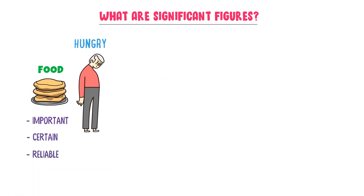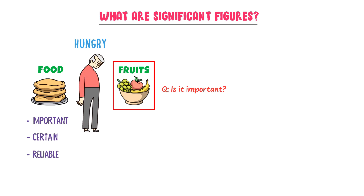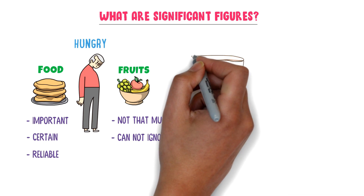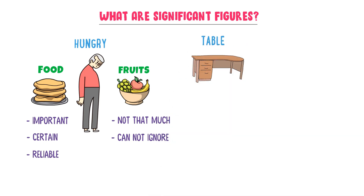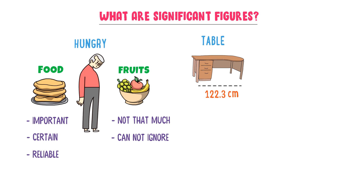Now consider that this hungry man adds some fruits to his food. Is it important to add fruit? Well, it is not that much important because the hungry man can kill his hunger only by the food. But remember that we cannot ignore its importance. Similarly, consider a table. Let the length of this table be 122.3 cm. Now I take the first three digits: 122.